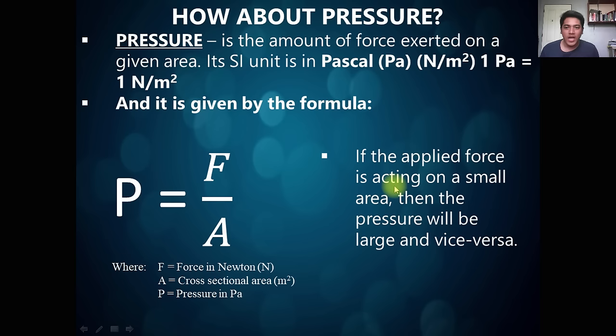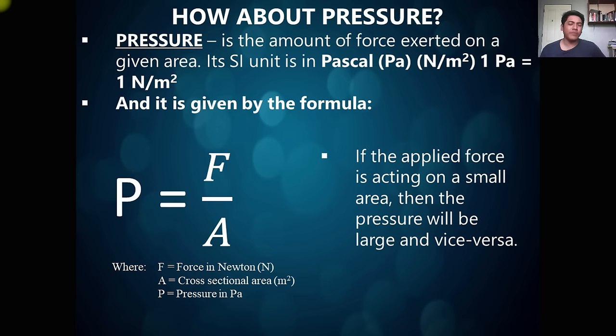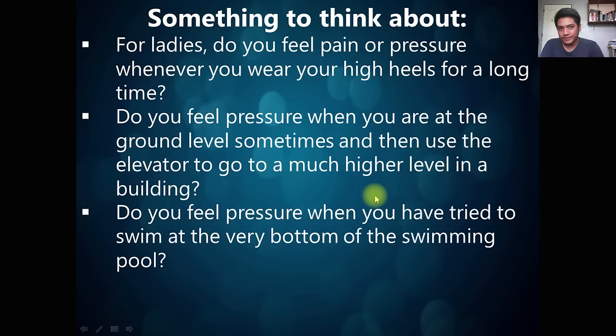Pressure has many units. Its SI unit is given in Pascal. But we can convert pressure into different types of units such as Torr, mmHg, Bar, and ATM. For now, we're going to focus on Pascals. The area here is the cross-sectional area of the object to which the force is acting.